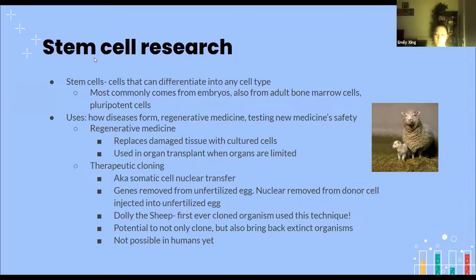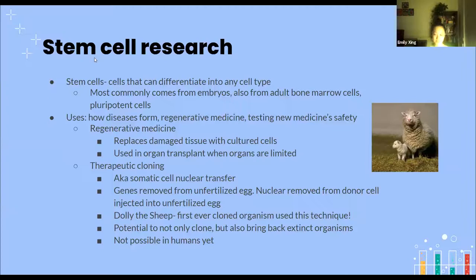HSCs are stem cells found in bone marrow that can turn into either white blood cells or red blood cells. Pluripotent cells can actually be turned back into totipotent cells — totipotent cells have the capability of turning back into a new embryo, while pluripotent cells don't but can differentiate into any other cell type. Uses for stem cell research include understanding how diseases form, regenerative medicine, and testing the safety of new medicine.